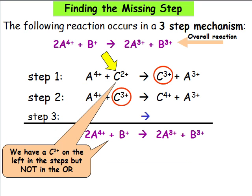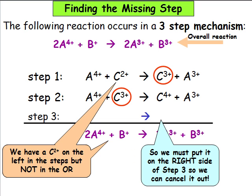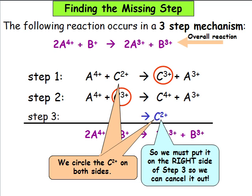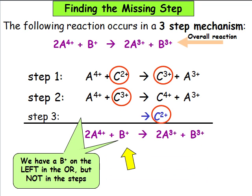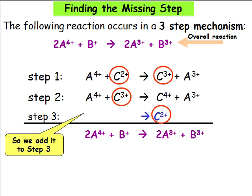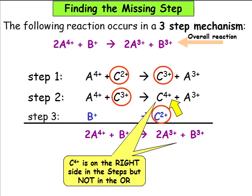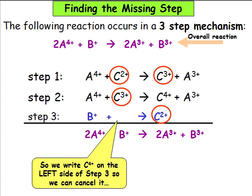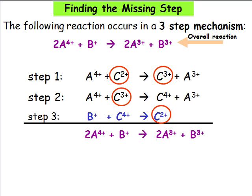We have a C2+ on the left in the steps but not in the overall reaction, so we must put it on the right side of step 3 so we can cancel it out. We circle the C2+ on both sides. We have a B+ on the left in the overall reaction but not in the steps, so we add it to step 3. C4+ is on the right side in the steps but not in the overall reaction, so we write C4+ on the left side of step 3 so we can cancel it, and we circle it.